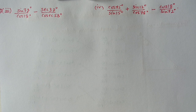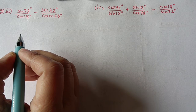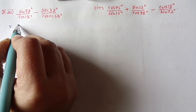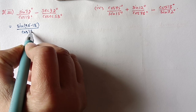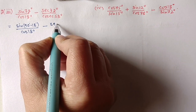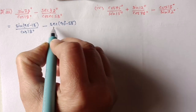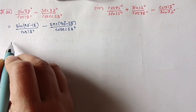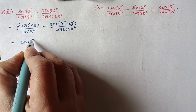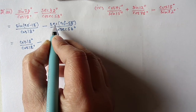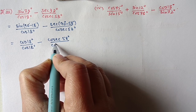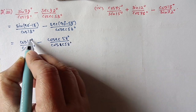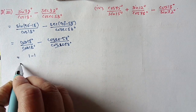Question 2, third part: sin 72° / cos 18° − sec 32° / cos 58°. Write sin 72° = sin(90° − 18°) = cos 18°, so the first term = cos 18° / cos 18° = 1. Write sec 32° = sec(90° − 58°) = cosec 58° ... and similarly the second term becomes 1. So 1 − 1 = 0.